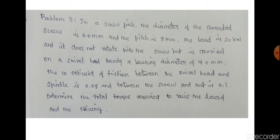In a screw jack, the diameter of the thread screw is 40 mm and the pitch is 8 mm. The load is 20 kN and it does not rotate with the screw.